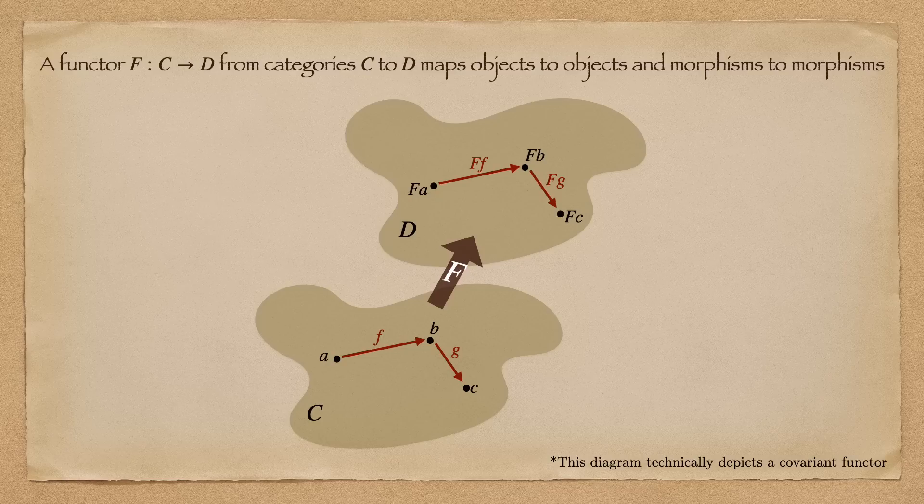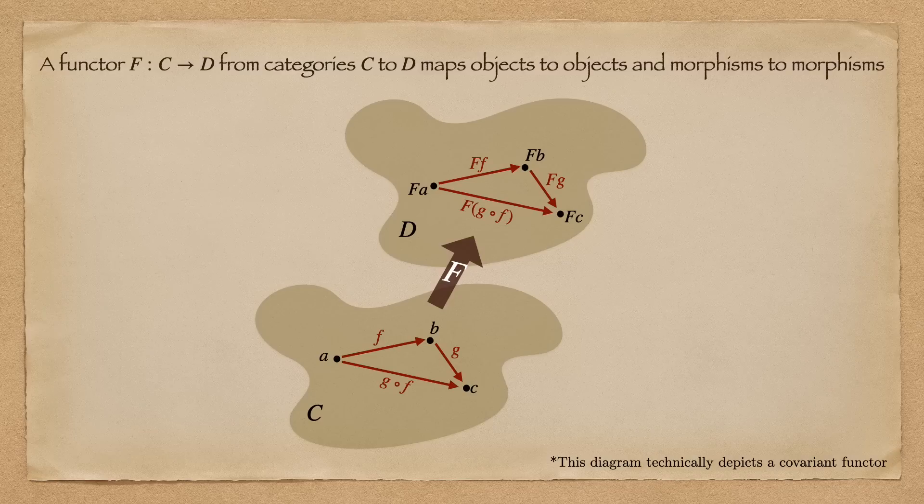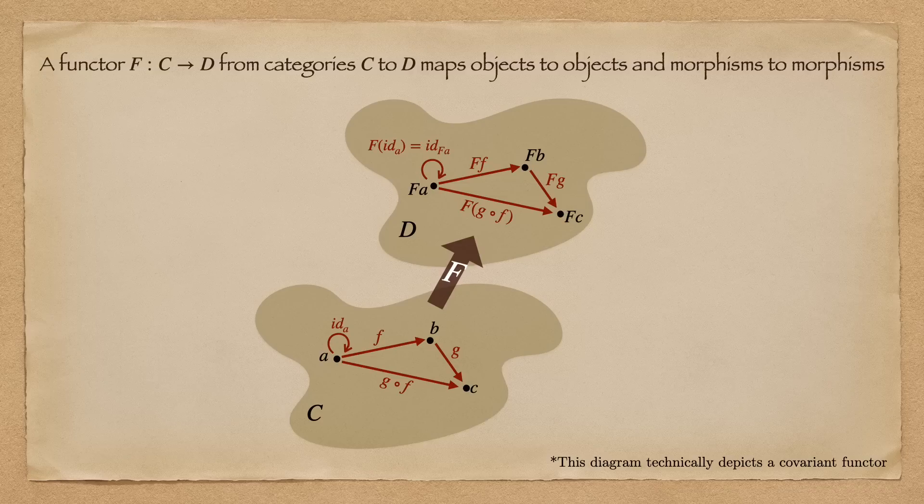The assignments need to satisfy the following two functoriality axioms. For each composable pair F and G in C, we need FF before FG to be the same as F of G composed with F. And for each object C in C, we need F of the identity on A to be the same as the identity on FA.